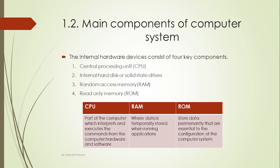Internal hardware has four key components. The first is the central processing unit or CPU. The second is the internal hard disk or solid state drive — internal hard disks have moving parts and are known as HDD, while solid state drives have no moving parts and are known as SSD. Most modern computers now have solid state drives. The third is Random Access Memory (RAM), and the fourth is Read-Only Memory (ROM).